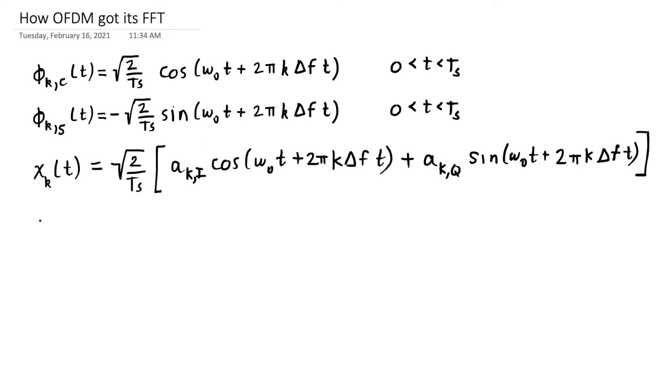Whatever these amplitudes are would be picked for the particular symbol that we've decided to send. And the OFDM signal for this symbol is going to be the sum of all these subcarriers. So for k equal to zero to capital B minus one, that is the number of subcarriers, we're going to have x of t at each of these added together.